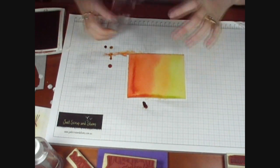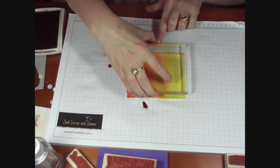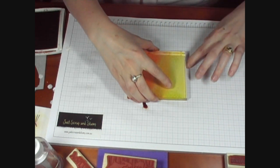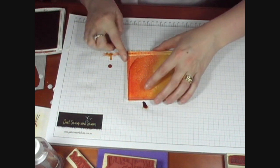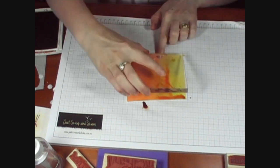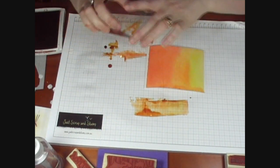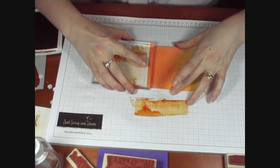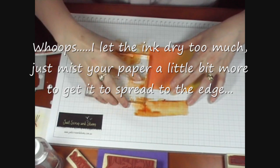Now I've missed the edges off there, so to fix that I can just very carefully put the block back on and gently move it side to side to spread the ink over the edge again. I'll just drag some excess off that end.